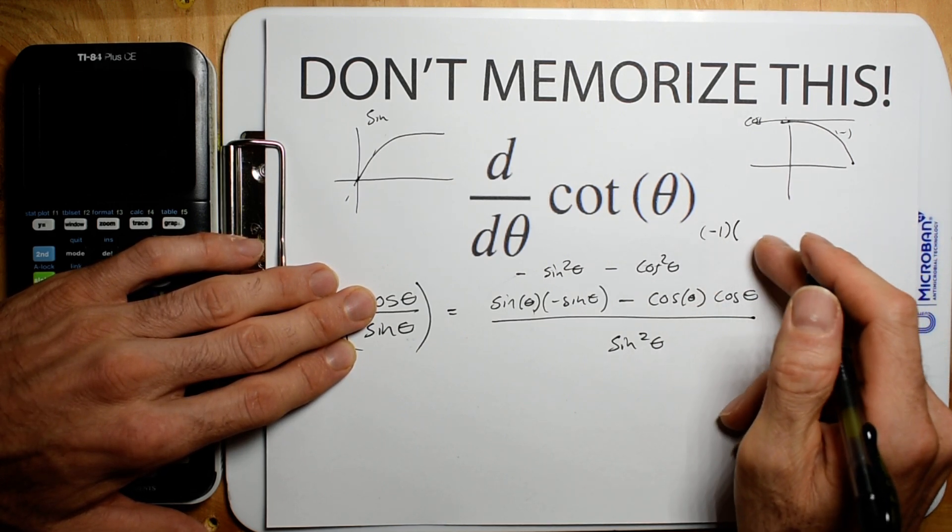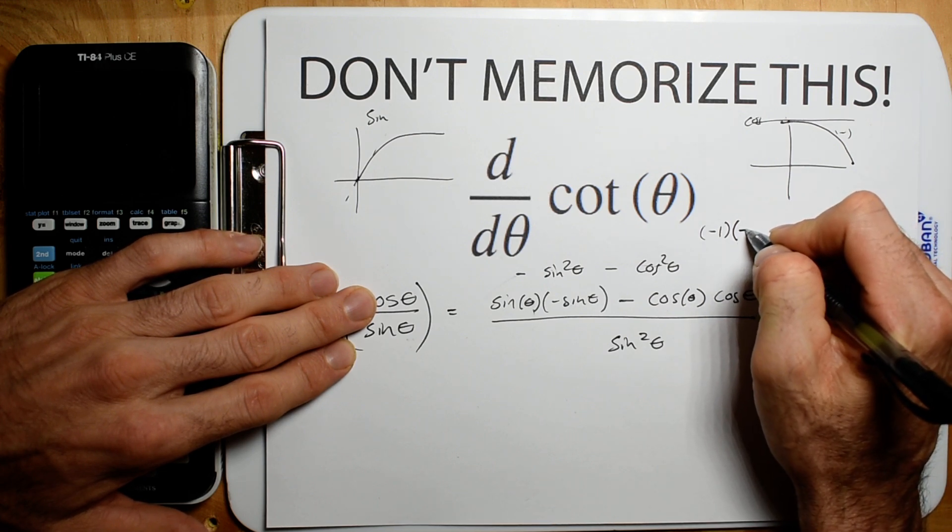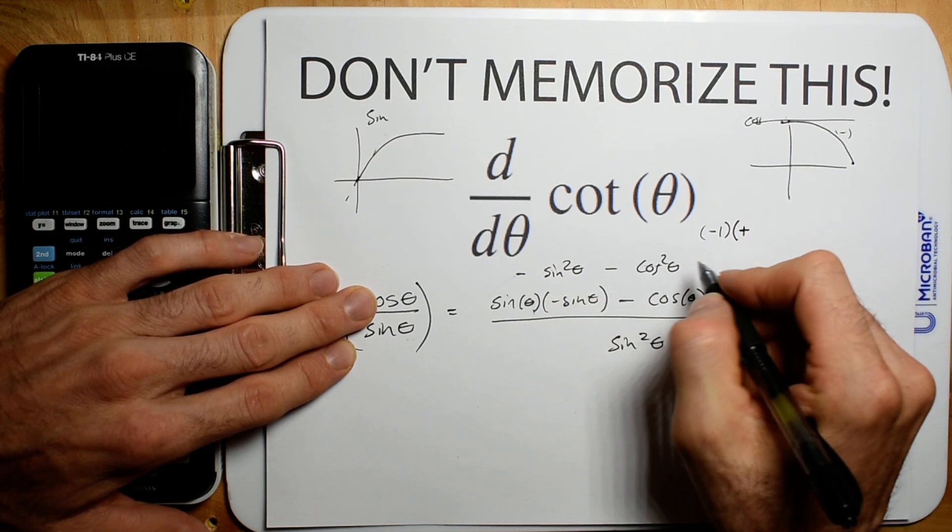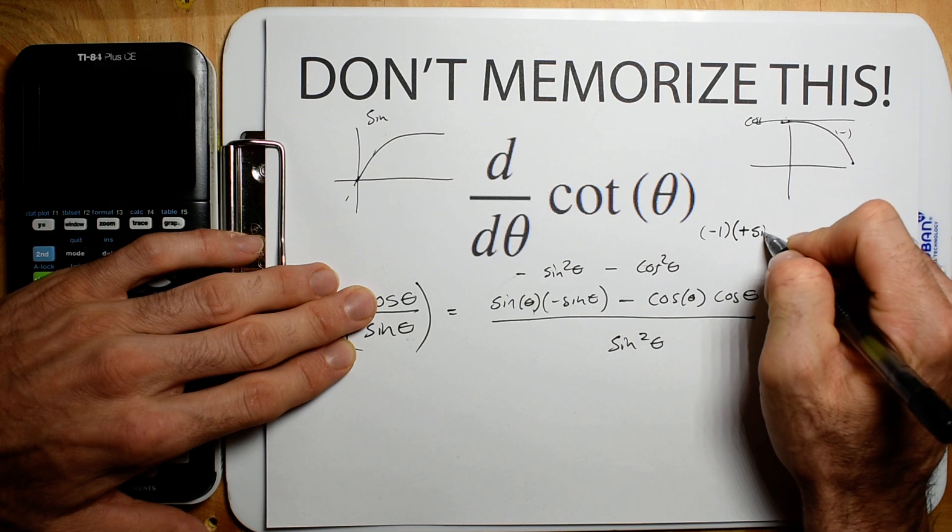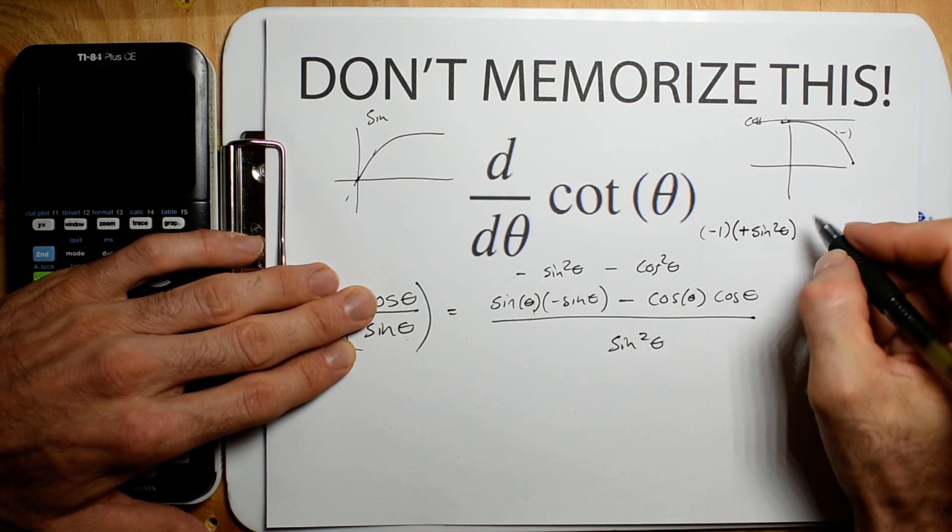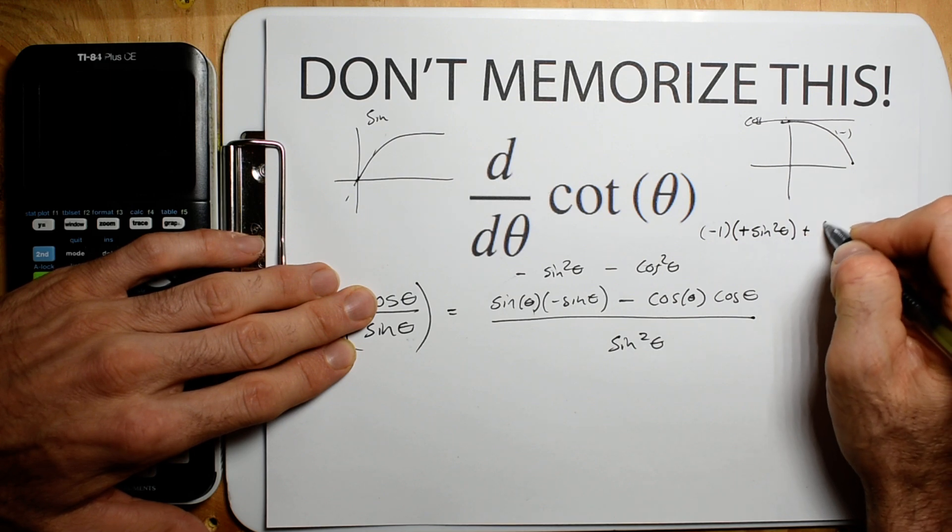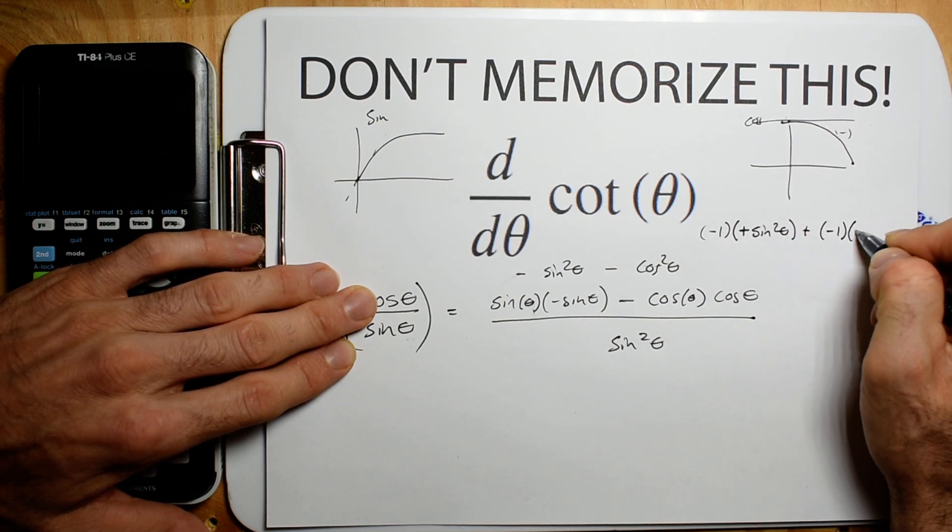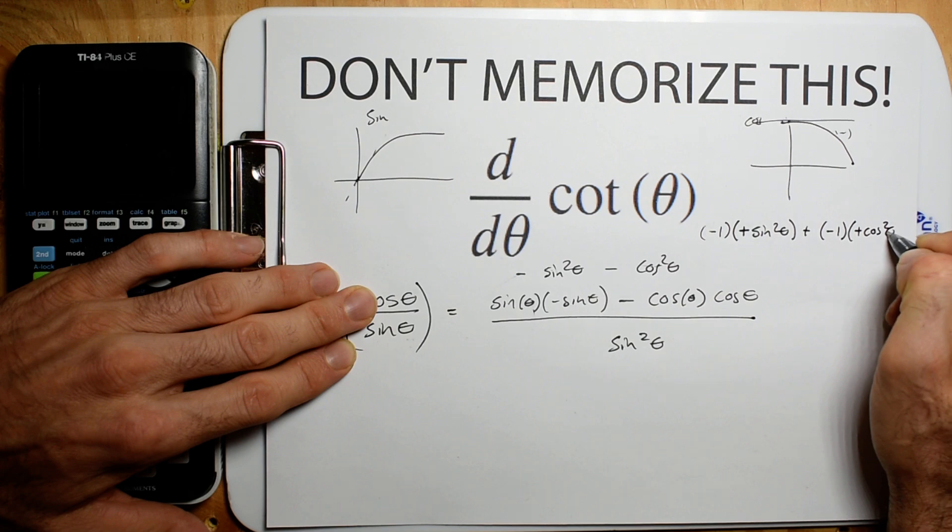And then say this is sine squared theta. I should make a whole video on this. Just say it's plus sine squared theta. Just so you know, this is definitely now a positive number. And now we're going to go plus a negative 1 plus cosine squared theta.